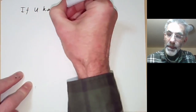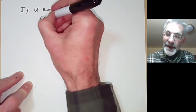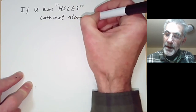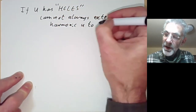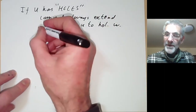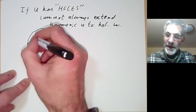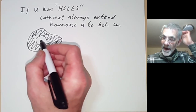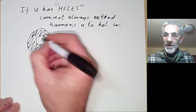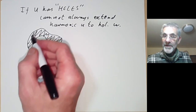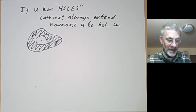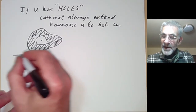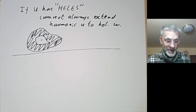So we see that if a region U has holes, then we cannot always extend a harmonic function u to a holomorphic function w. If we take a region with a hole — say with the hole at the origin — we could take u = log|r| and run into the same problem of not being able to find a holomorphic function with real part u. On the other hand, if U doesn't have holes — if U is simply connected — then we can do this.